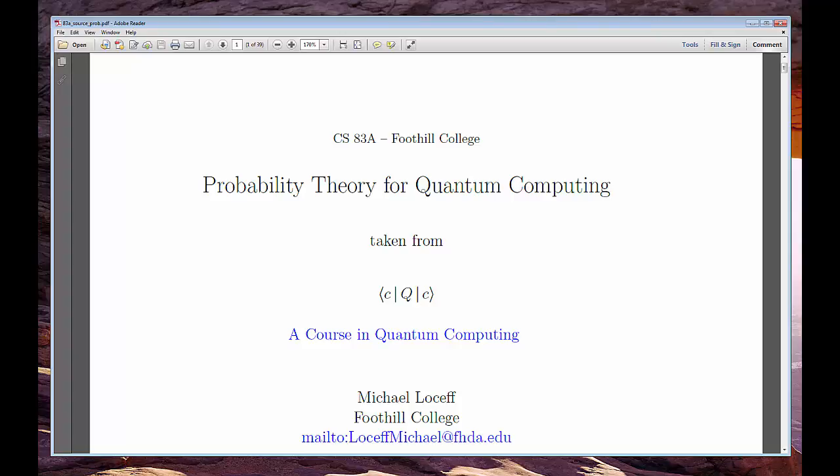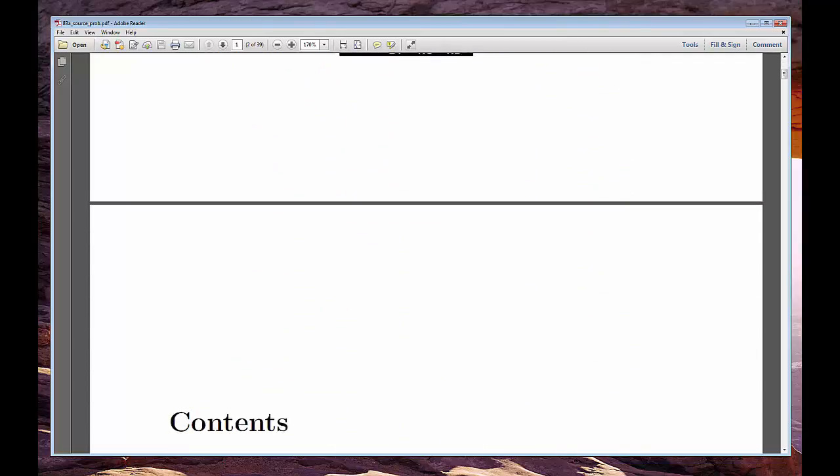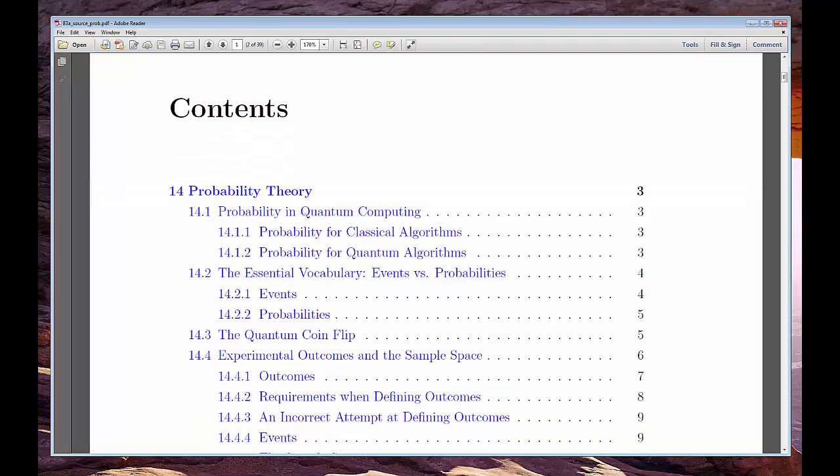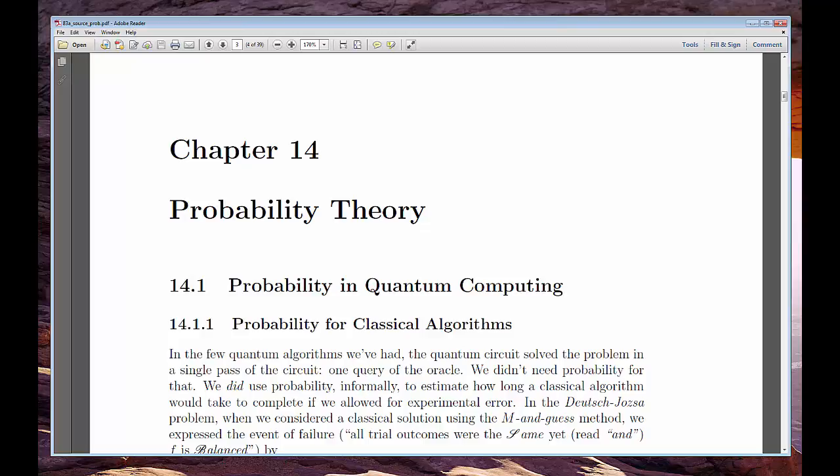We've already used a bit of probability theory informally when computing the classical time complexity of the Deutsch-Josza problem. That wasn't too hard to swallow, but for the two remaining algorithms and those beyond, we'd better officially check off the box titled Probability Theory.